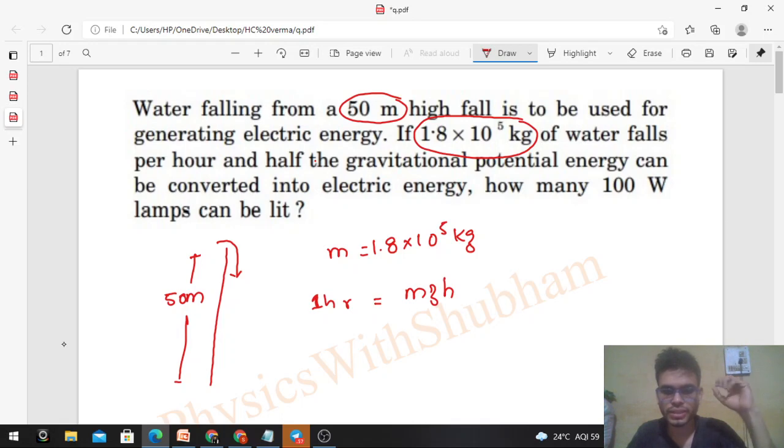This much of the potential energy we have, but half of it can be converted to the electric energy. So how much electric energy do we have in one hour? That is half of this potential energy, so mgh/2. This is the amount of electric energy in one hour we can generate with the help of this falling water, right?